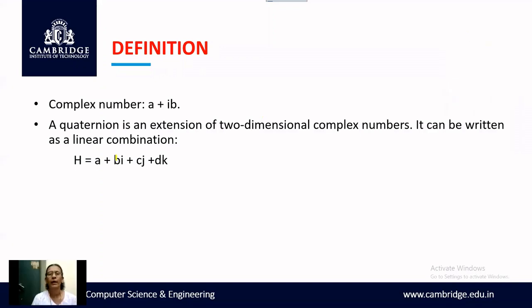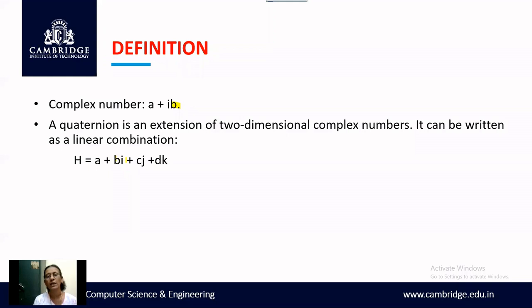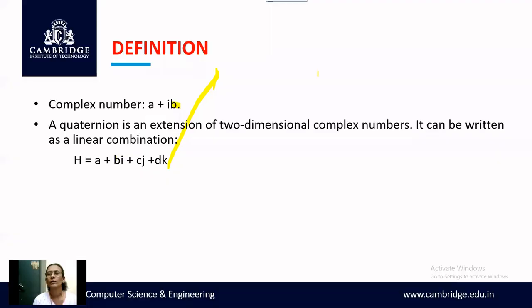You can write a number as A plus Bi plus Cj plus Dk, and then it is called a Quaternion. You can imagine that the imaginary part B is being split into three components corresponding to your X, Y, and Z axes. So the complex number A plus iB is now written as A plus Bi plus Cj plus Dk — i corresponding to the X axis, J to the Y axis, and K to the Z axis. A Quaternion is an extension of two-dimensional complex numbers.